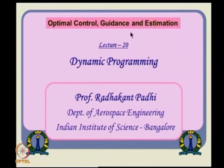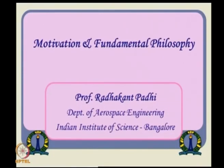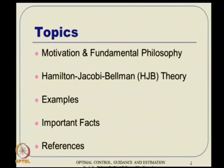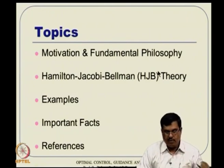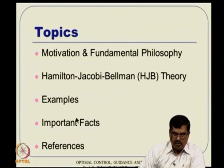All right everybody, we will start with our lecture series on lecture number 20 in this optimal control guidance and estimation course. We will start with motivation and fundamental philosophies, then continue with Hamilton-Jacobi-Bellman theory, which is the backbone of dynamic programming. We will also give some examples, list out certain important facts, and provide references for everybody to follow.